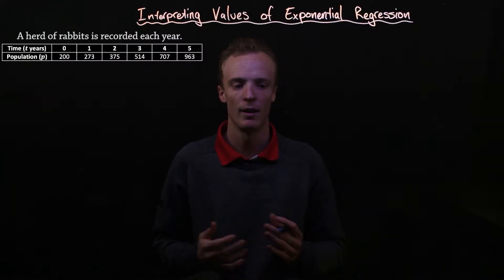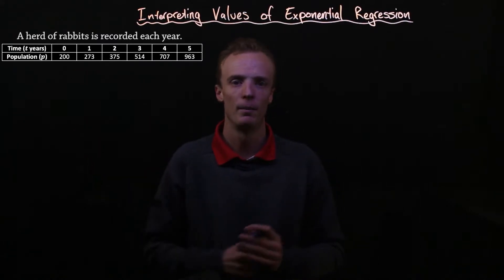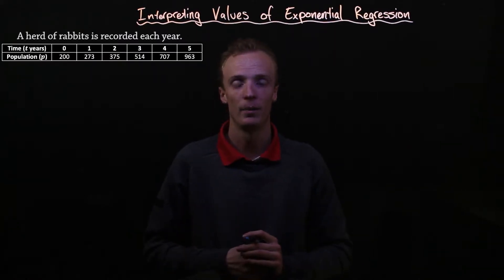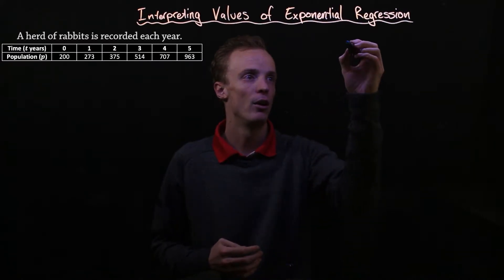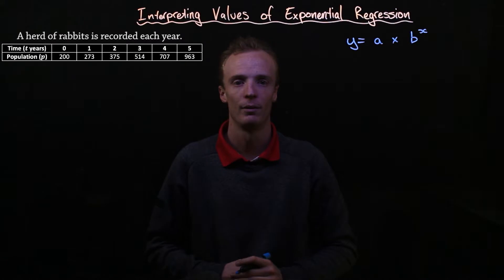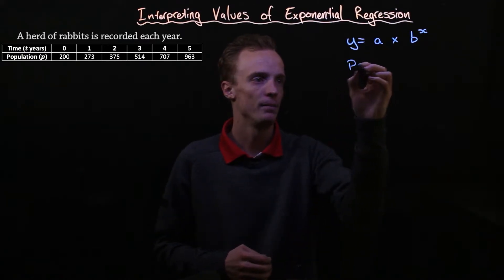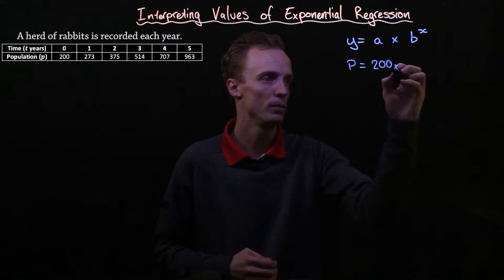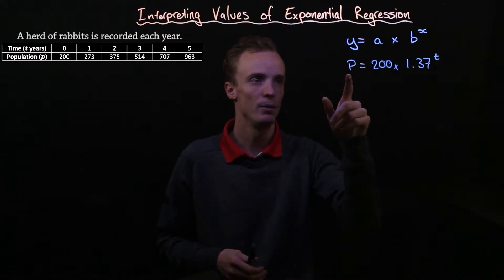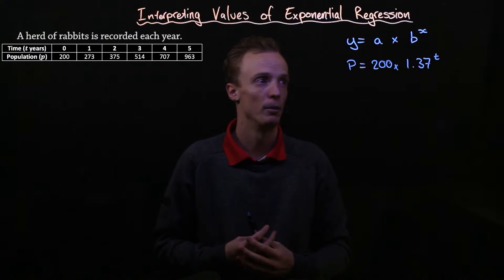In the previous video I showed you how to use a graphics calculator to find the equation of an exponential regression model using the question that I've just placed up here. Today we're going to look at what the values of a and b represent inside that exponential regression model, which was represented in the format of y equals a multiplied by b to the power of x. In the previous video we found that the line of best fit was p equals 200 multiplied by 1.37 to the power of t, where p is our response variable and t is our explanatory variable.